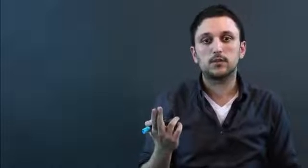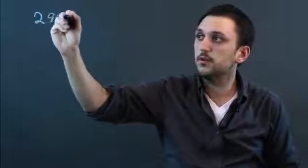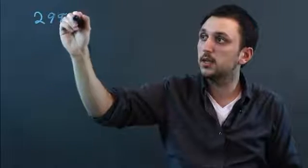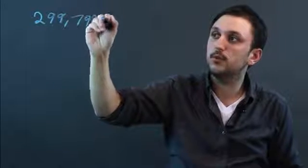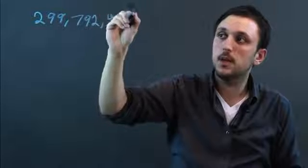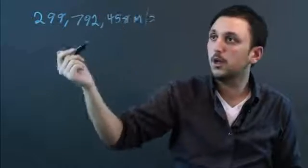Now, a light second is the speed of light per second, and in the metric system we say that it is 299,792,458 meters per second.